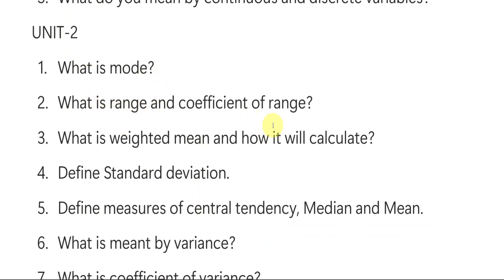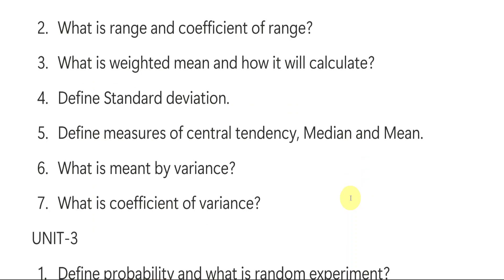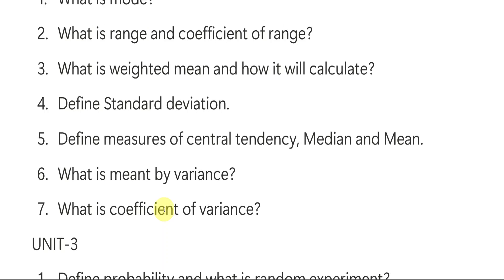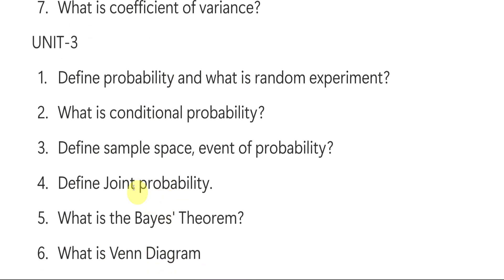From unit number two short important questions: What is mode, range, and coefficient of range? What is weighted mean and how is it calculated? Define standard deviation. Measures of central tendency — median, mean, and mode. Variance and coefficient of variance. These are the important short questions from unit number two.